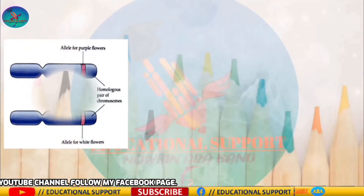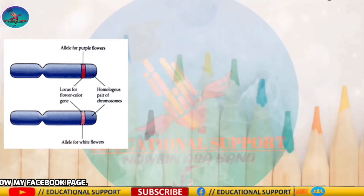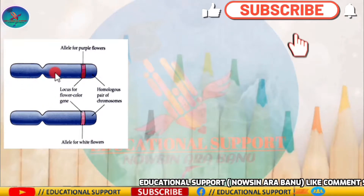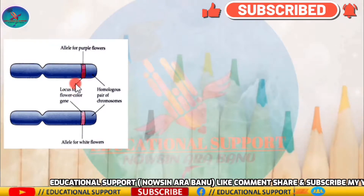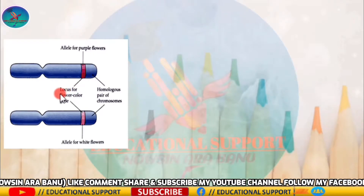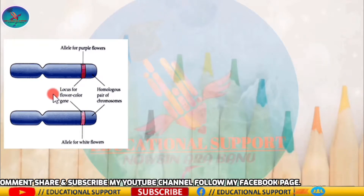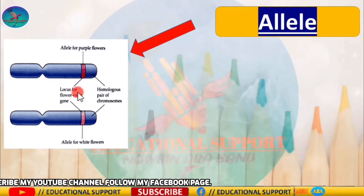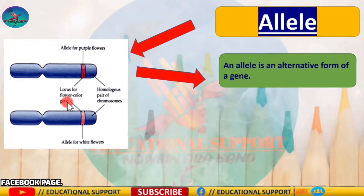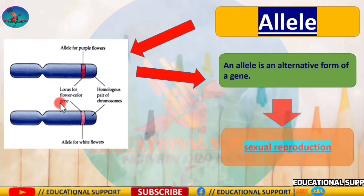Did you know what is an allele? An allele is an alternative form of a gene. Alleles arise by mutations. They are present in the same locus of the homologous chromosome pair. An allele determines a specific trait of a particular organism. This trait is passed from one generation to the other by sexual reproduction.